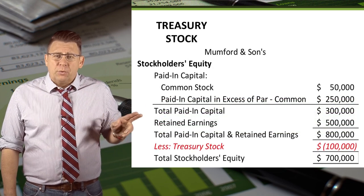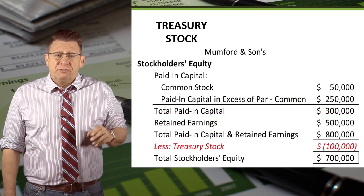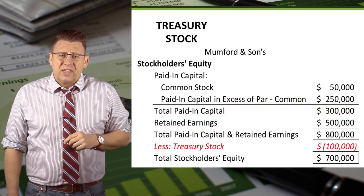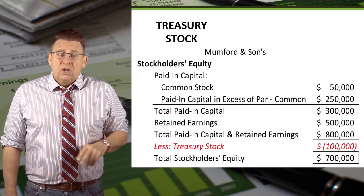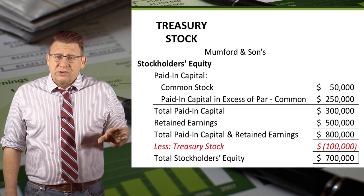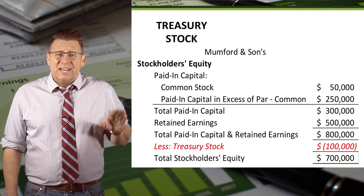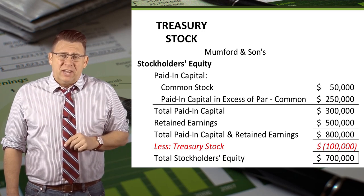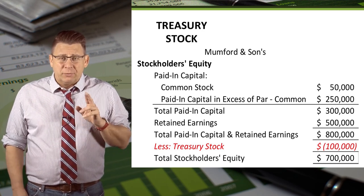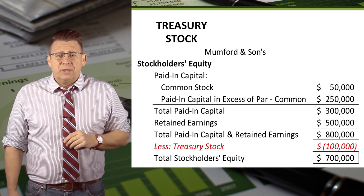The stockholders' equity section after the purchase looks like this. Notice Treasury stock is listed after retained earnings and is a reduction in equity.